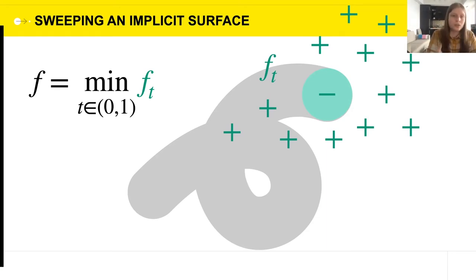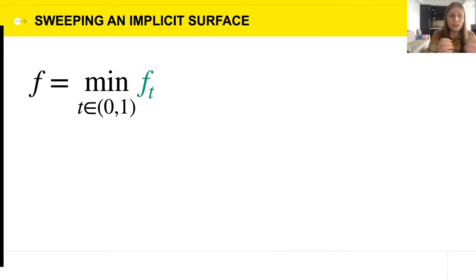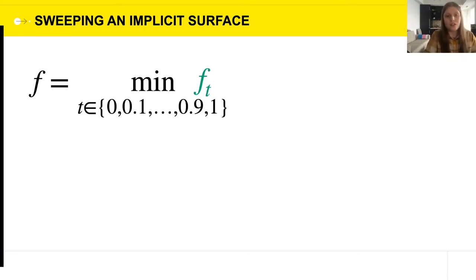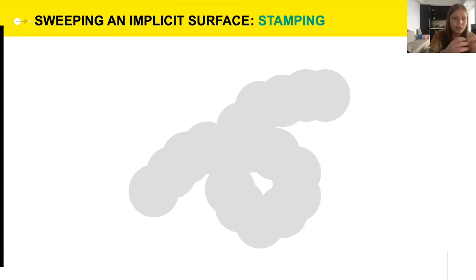Now, a usual strategy in computer science, when we are faced with a continuous parameter that we don't know how to handle, is to discretize it. So instead of t changing continuously between 0 and 1, we take a time step like 0.1 and consider a discrete minimum, which will give us something like this. We refer to this algorithm as stamping. Yes, it's clearly better than nothing, but it doesn't really look very good. Of course, it'll become better if we make the discretization finer, but it will take many very, very small steps to make it look like the smooth swept volume. So this doesn't seem like a particularly smart or a particularly efficient algorithm.